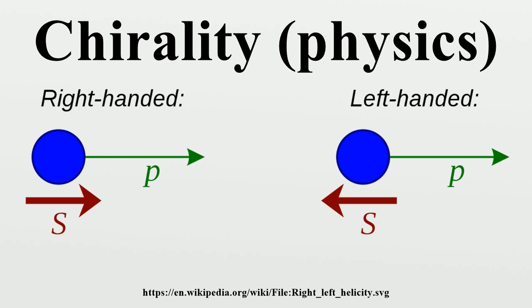Chirality and helicity. The helicity of a particle is right-handed if the direction of its spin is the same as the direction of its motion. It is left-handed if the directions of spin and motion are opposite.